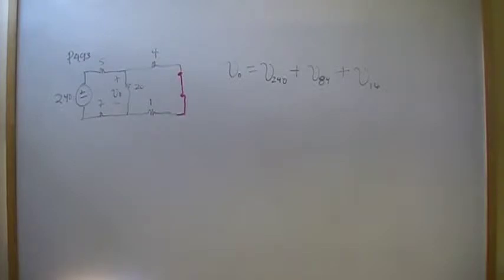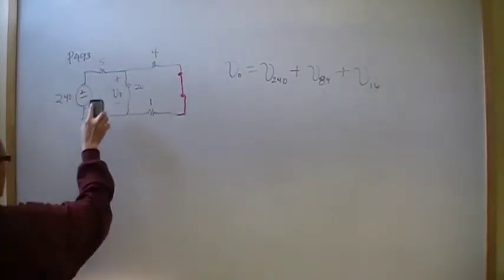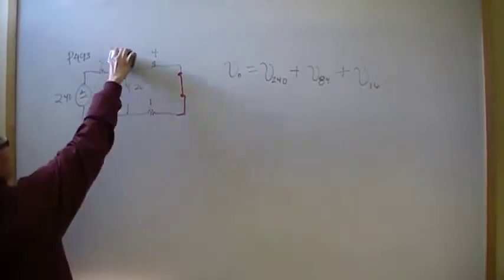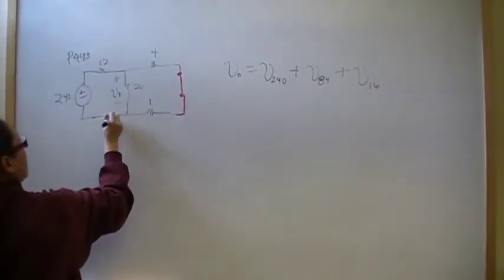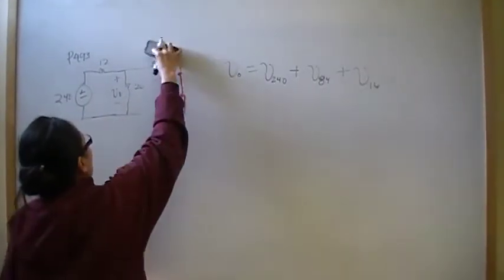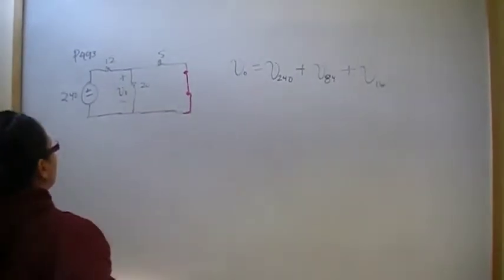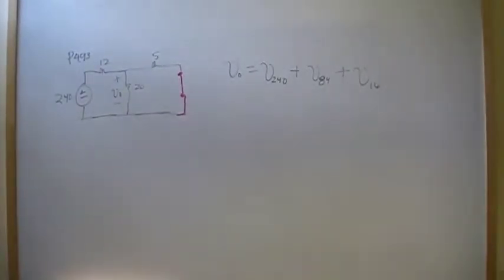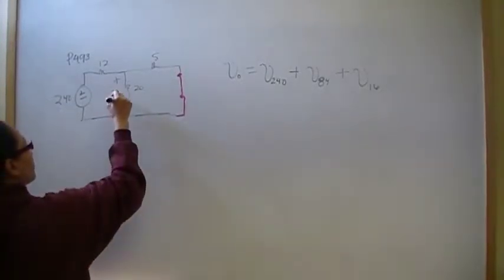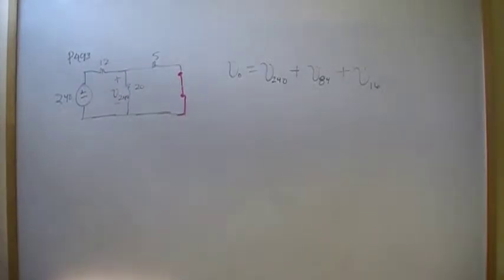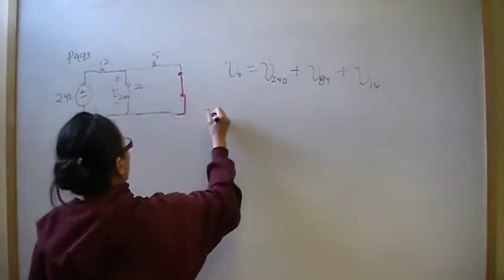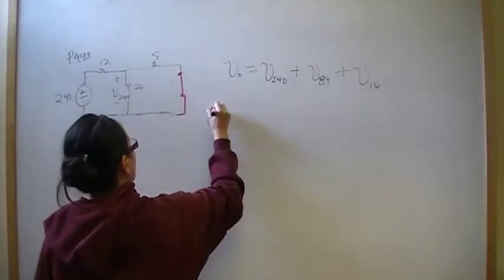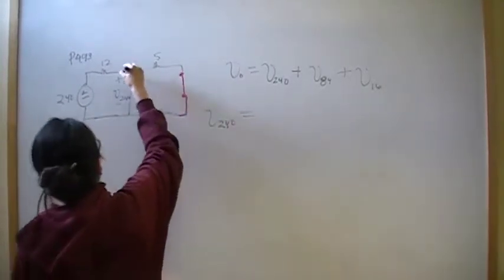So now we have a circuit where we're only looking at the effects of the 240 independent voltage source. At this point, I'm going to redraw it a little more. I'm going to combine these two. They're series connected, so I'm going to put this one up here and call it 12. And then I'm going to put this one up here and call it 5. The way that I chose to do that is to take KCL at V, and then this is going to be V240.